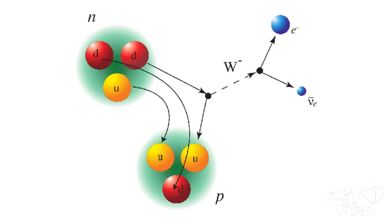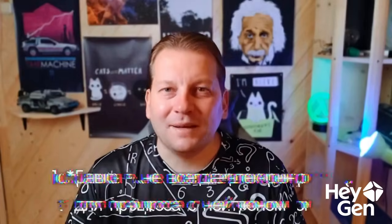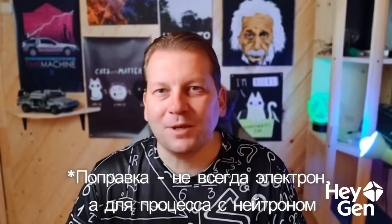When a neutron decays, a certain transformation occurs. These particles do not just disappear without a trace — the neutron turns into a proton, an electron, and an antineutrino. The conservation laws we've talked about many times still apply. This process is usually called beta decay, because an electron is emitted in the process.